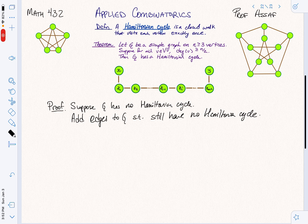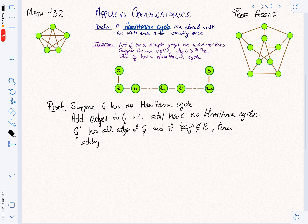Add edges to G such that we still have no Hamiltonian cycle. So I want to add as many edges as possible until any edge that I add would give me a Hamiltonian cycle. So then I'm going to get this graph G prime, which is going to have the property that it has all the edges of G, and if X, Y is not an edge, then adding X, Y to the edges creates a Hamiltonian cycle.